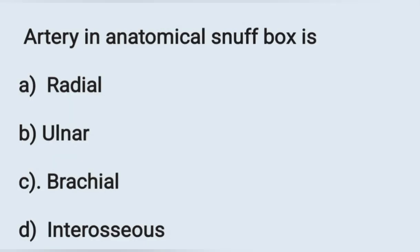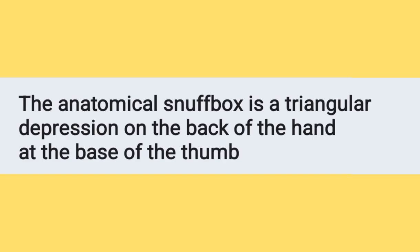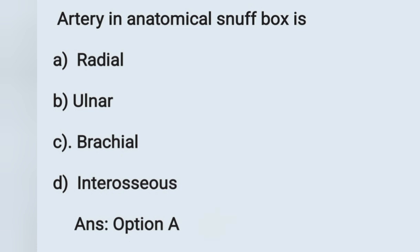Next question: the artery in the anatomical snuffbox is which artery? Options: (a) radial, (b) ulnar, (c) brachial, (d) endrocious. The anatomical snuffbox is a triangular depression on the back of the hand at the base of the thumb. The artery found there is the radial artery. Option A is the correct answer.